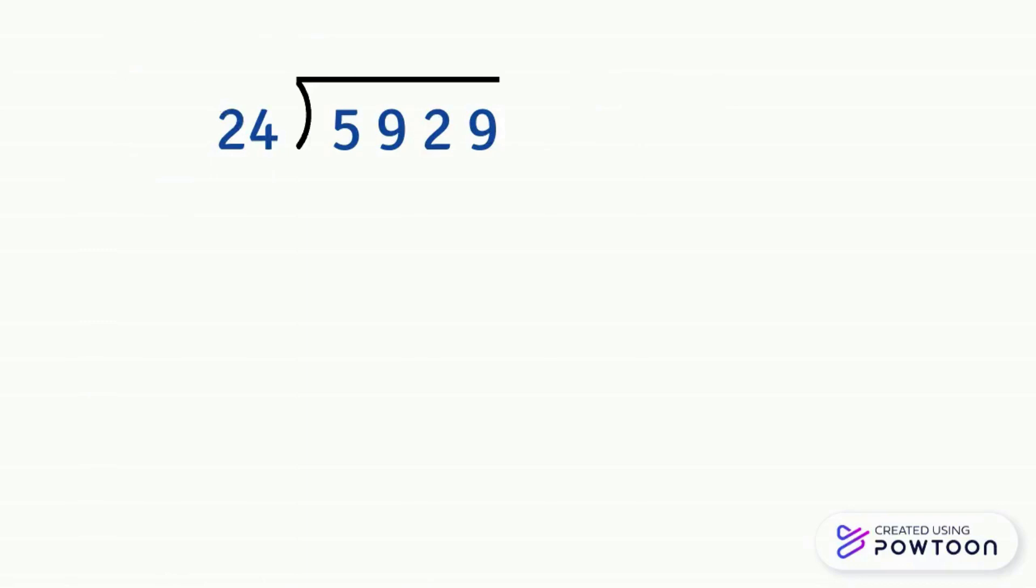As for a division with a divisor of one digit, we start from the left to the right. Here we will start with the number 5 and we want to divide 5 by 24. So we ask ourselves the question: 24 times what gives us 5 or a number very close to 5? Or we can say how many times we repeat the number 24 to get 5.